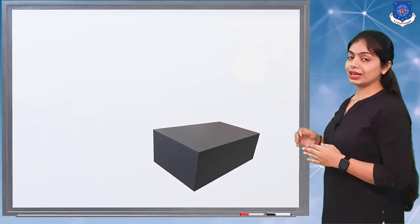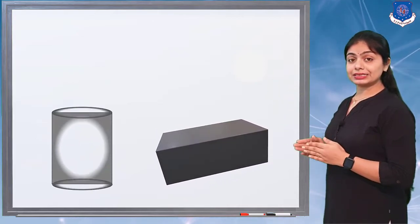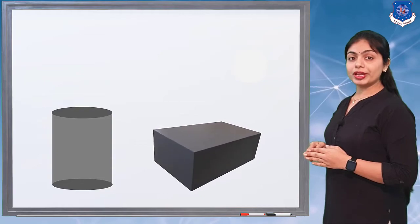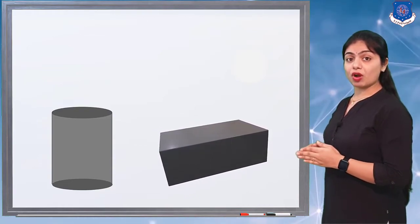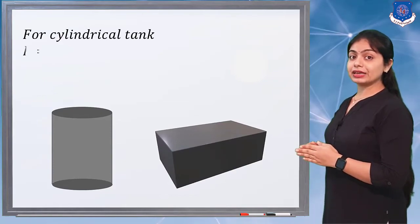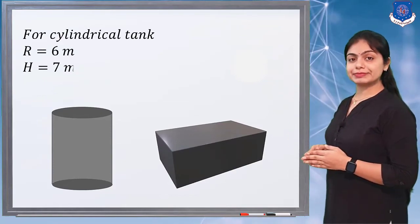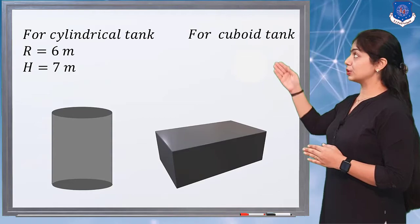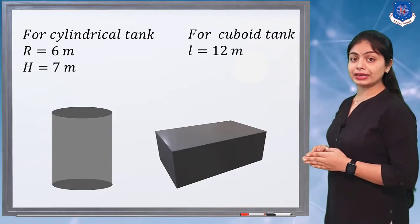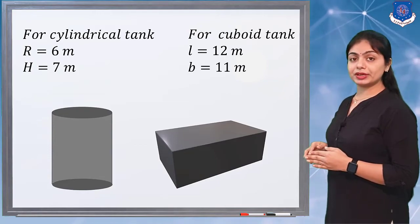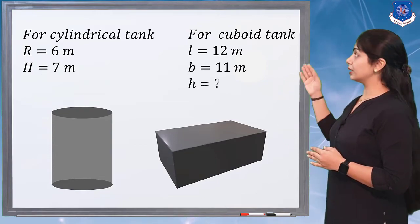Now we will start our answer. The given figures show the cuboid and cylindrical tanks. For the cylindrical tank, R = 6 m and H = 7 m. For the cuboid tank, l = 12 m and b = 11 m.